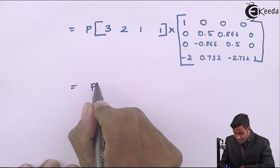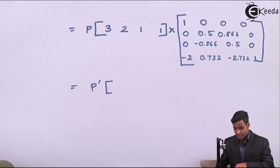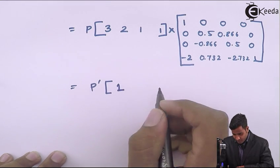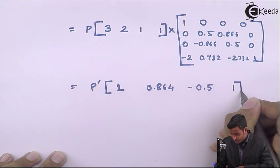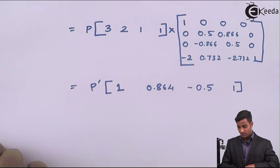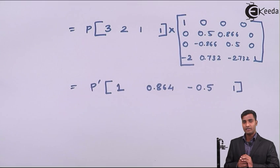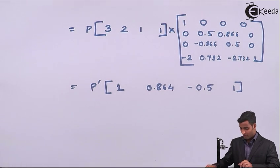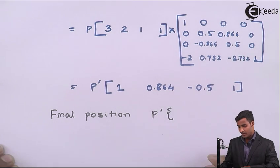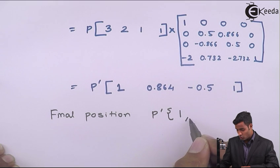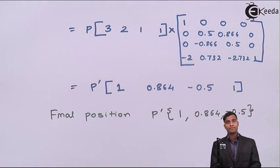After multiplying both matrices, the final position P dash is obtained. Converting from matrix form to coordinate form, the final position P dash is (1, 0.864, -0.5). This is the final position for the problem.